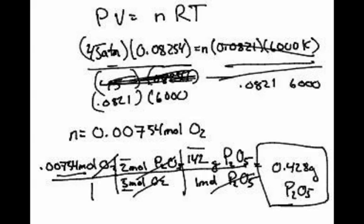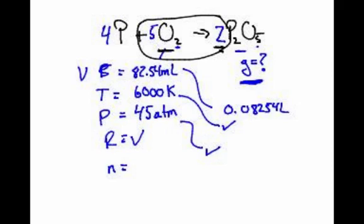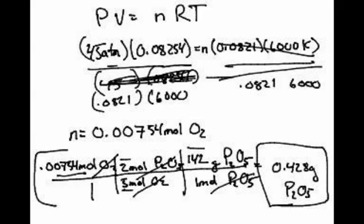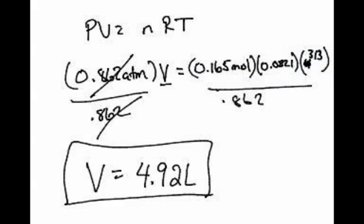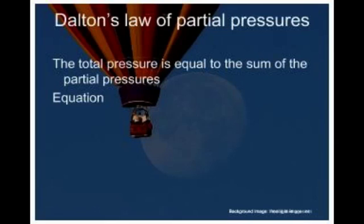Now notice on this particular problem, let me just compare and contrast real fast. On this particular problem, what I did is I did an ideal gas law problem first, and then I went and did some stoichiometry or dimensional analysis. In the previous problem, let me hop back to that. In the previous problem, what I did is we did stoichiometry first, and then we did the ideal gas law. You have to look at the problem and decide which way it's going to go. I basically just look for PV equals NRT. If I'm missing two things, I do stoic first. If I have all of them, I do PV equals NRT first. Next concept.